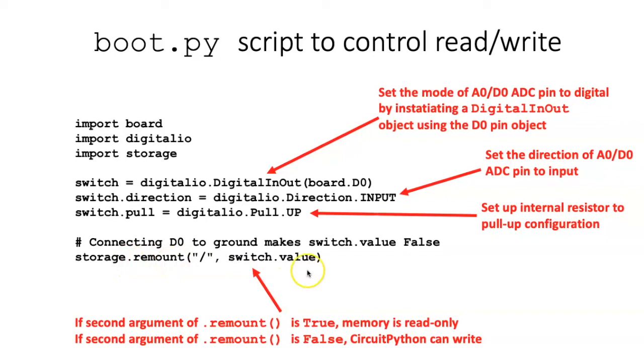If the switch is closed and the value is at ground, then it will return a value of false. And then CircuitPython will be able to write.